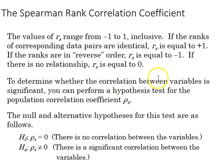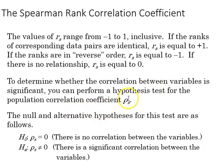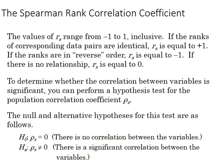To determine whether the correlation between variables is significant, we can use a hypothesis test for the population correlation coefficient, which is rho subscript s, indicating the population Spearman rank correlation. Our null hypothesis is no correlation, and the alternative is there is a correlation.